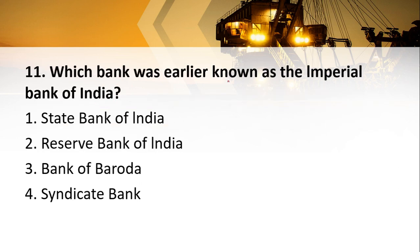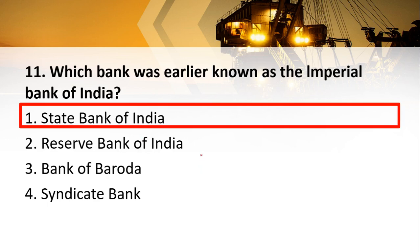Next question: Which bank was earlier known as the Imperial Bank of India? Options are State Bank, Reserve Bank, Bank of Baroda, or Syndicate Bank. The answer is State Bank of India — State Bank of India was formerly known as Imperial Bank of India.